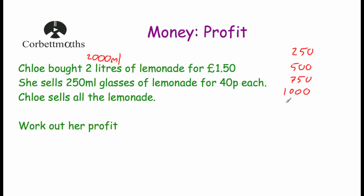Let's carry on and verify: 1,250, 1,500, 1,750, and 2,000. So as you can see, Chloe sells 8 glasses of lemonade. She sells them for 40p each, so if we multiply 40p by 8 we can work out how much money Chloe made altogether from selling the lemonade.